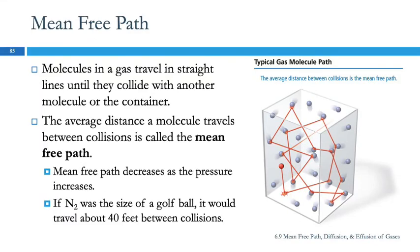We're talking about how gas molecules travel in straight lines until they run into another molecule or the container. We can look at the average distance that a particle travels before it runs into something, and this is known as the mean free path, the average distance between collisions.